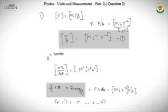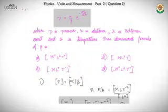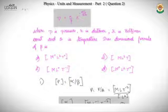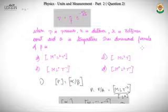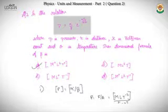The key takeaway: don't panic when you see Boltzmann's constant — recall equations involving kθ, like the kinetic energy formula. Also remember that e raised to any power is dimensionless, and the same applies to sin x, cos x, tan x, or any function where a number is placed inside. The answer to question two is option A.